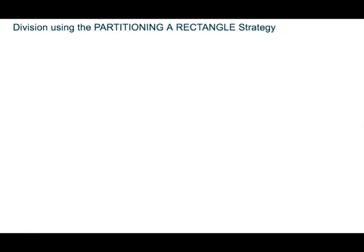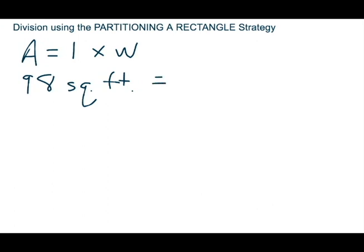This strategy is actually found in unit six. Let's say we have a problem where the art club is making a mural. They have 98 square foot tiles, and they know that they want the mural to be seven feet long. They are trying to figure out how tall it will be. The area formula is length times width. We know they have 98 square foot tiles and they want it to be seven feet long. We do have an unknown, so 98 square feet equals seven feet times an unknown feet.